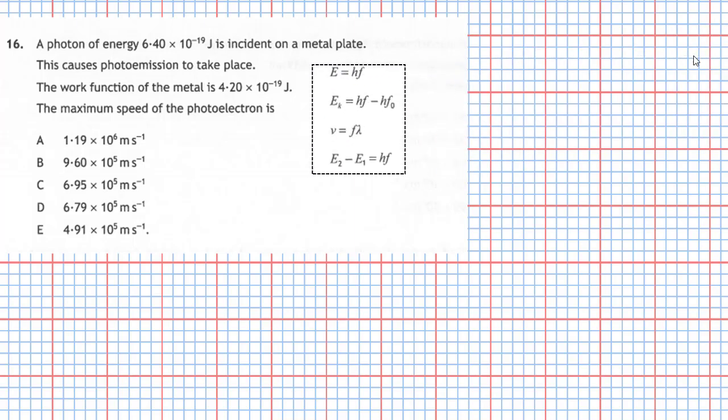Taking a look at our data sheet of equations, you can see that the kinetic energy of the photoelectron emitted can be found from hf minus hf0. That is the energy of the photon take away the work function. Remember, the work function is the minimum amount of energy needed to release an electron from the surface, and the photon has energy more than that work function. So therefore you will get some excess energy appearing as kinetic energy of the photoelectron. So our first move then is to work out that kinetic energy, and we use the equation here.